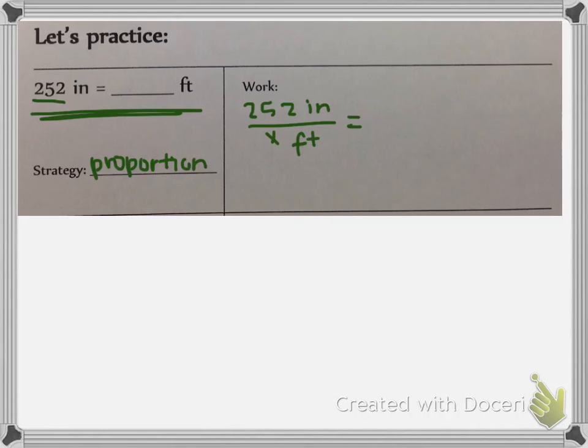Remember that a proportion is two equivalent ratios, so I need to put an equal sign and write another ratio. The ratio that I'm going to write is how many inches are in every one foot, which I do know. I know that there are 12 inches in every one foot, so I'm going to write that as my second ratio.